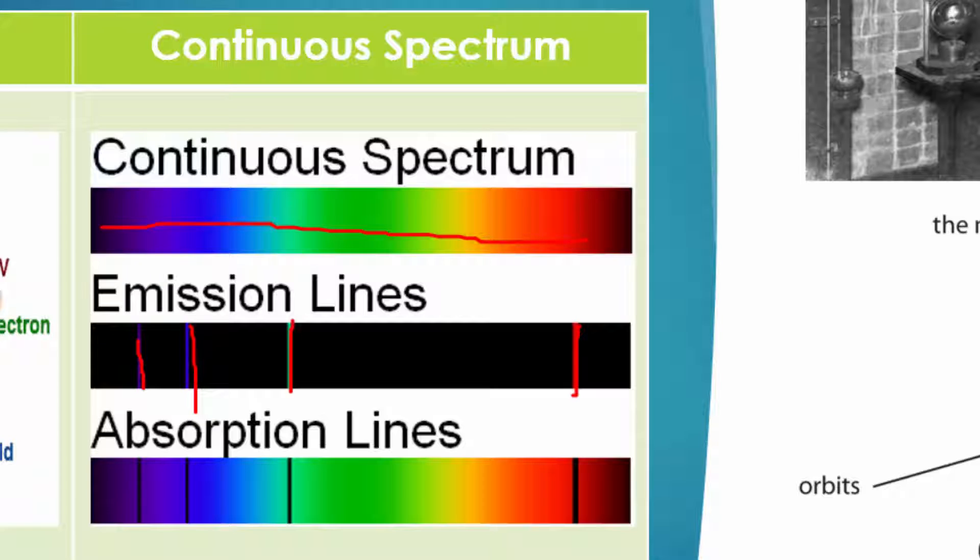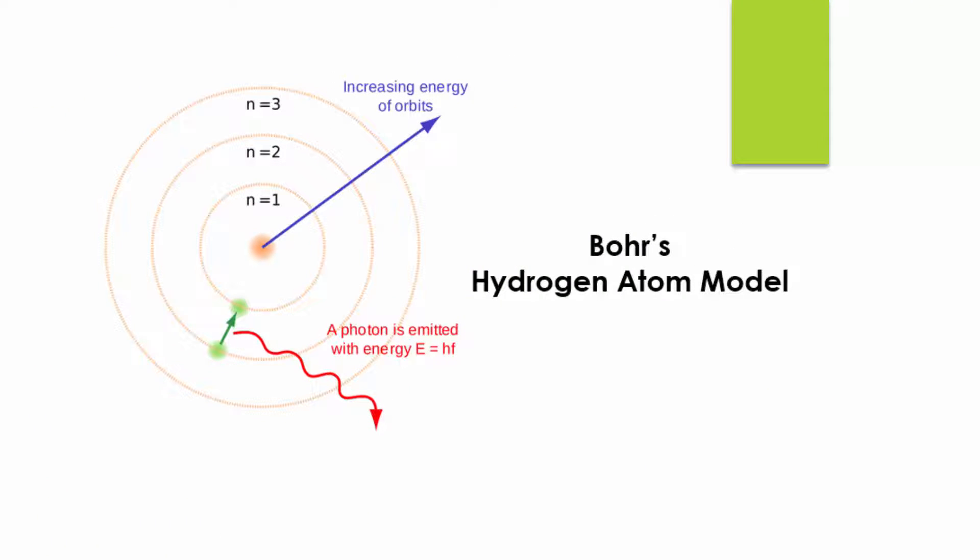So how did scientists solve this problem? In 1913, Niels Bohr proposed a solution to this dilemma. So let's look at Bohr's hydrogen atom model.